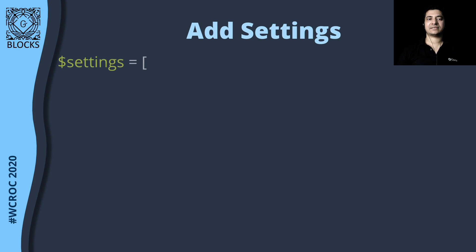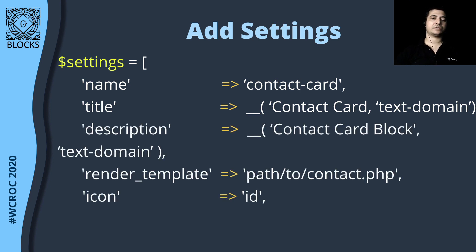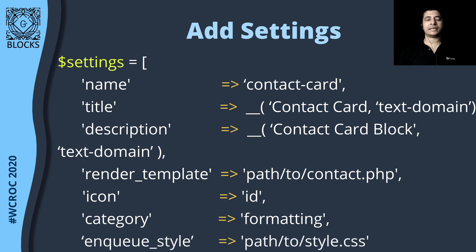What do we have in the settings? The first thing is the name of the block — let's say this is 'contact-card'. Then the title of the block, description, and you also have the path to the render template. Just like the dynamic template example from previous slides, this also uses a PHP template to render the content of the block. You also have the icon — you can use the dashicons. You can also create a new category or assign this block to any existing categories in the editor. You can also include your styles for the block, which will be applied both in the editor as well as in the front end.